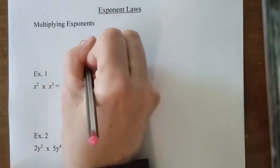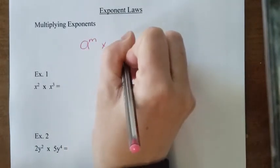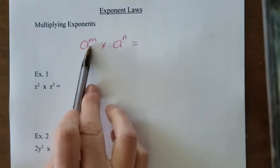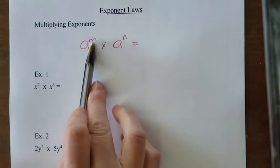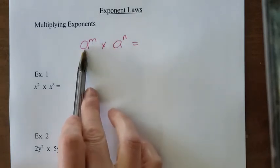So if we have a to the power of m times a to the power of n, well, the a is what we call the base, and m is the exponent or the power. So when the bases are the same, in this case they are a and a...